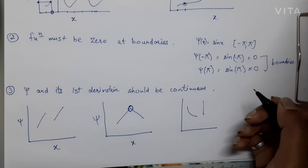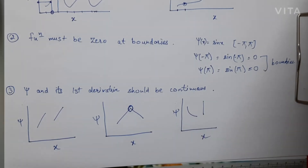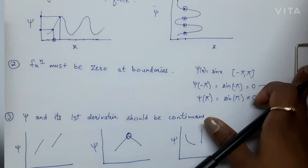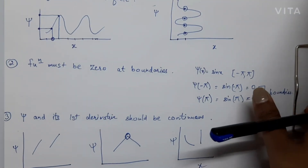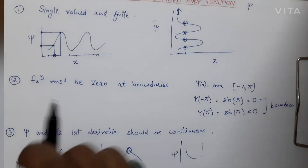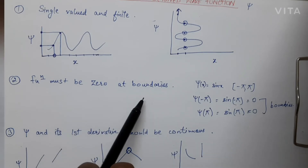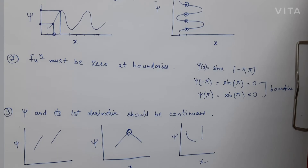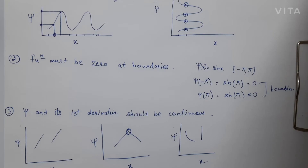These kinds of discontinuous or sharply-changing functions are not acceptable. The function should be continuous with no sharp changes, so that the wave function is acceptable. To summarize, the three conditions are: it should be single-valued and finite; it must become zero at the boundaries; and the wave function and its first derivative should be continuous with no sharp changes or breakages.